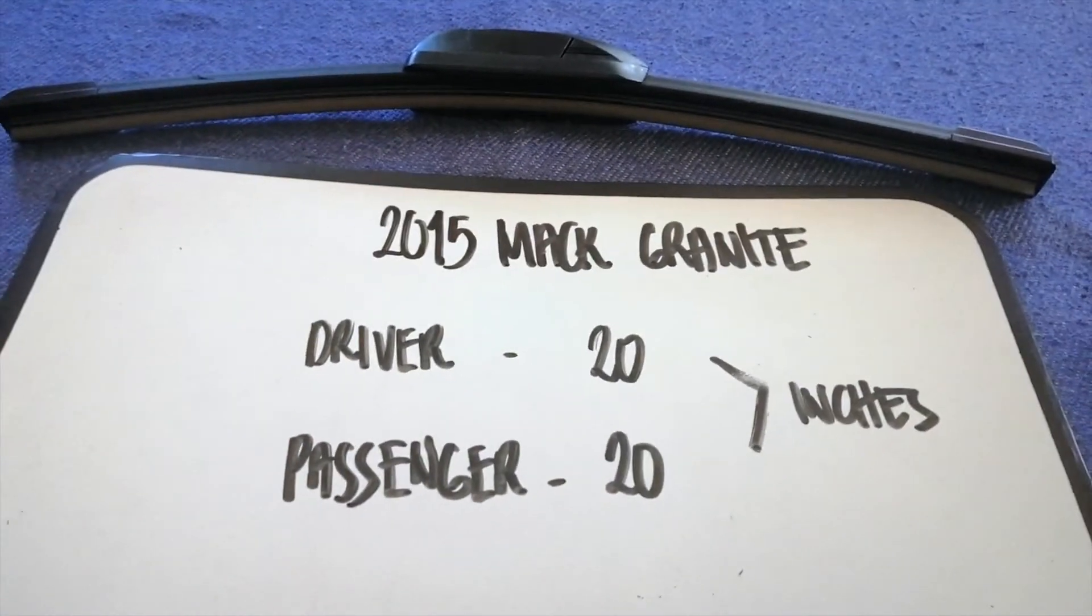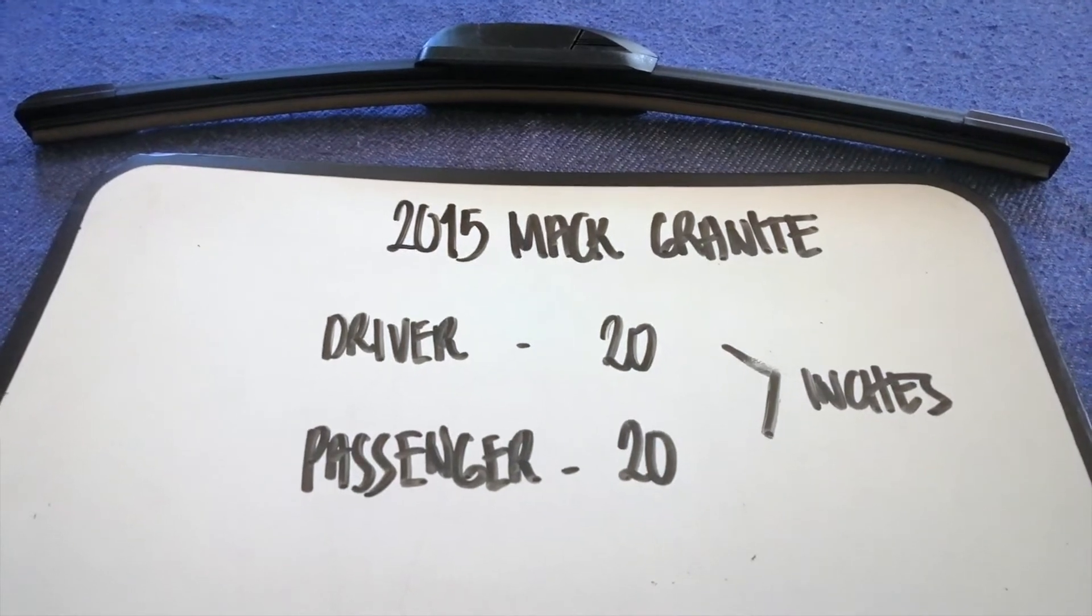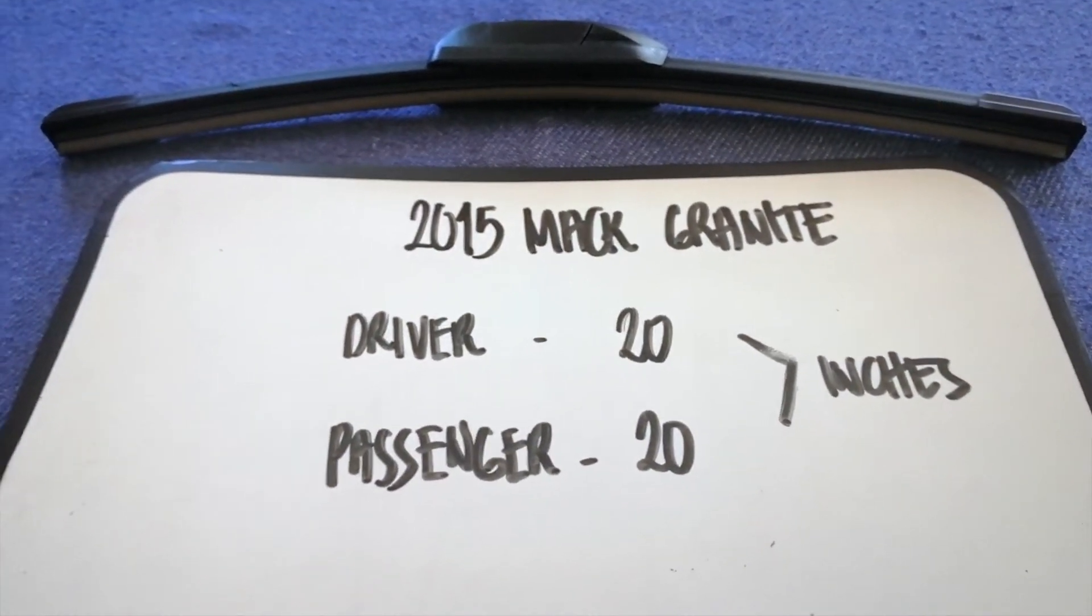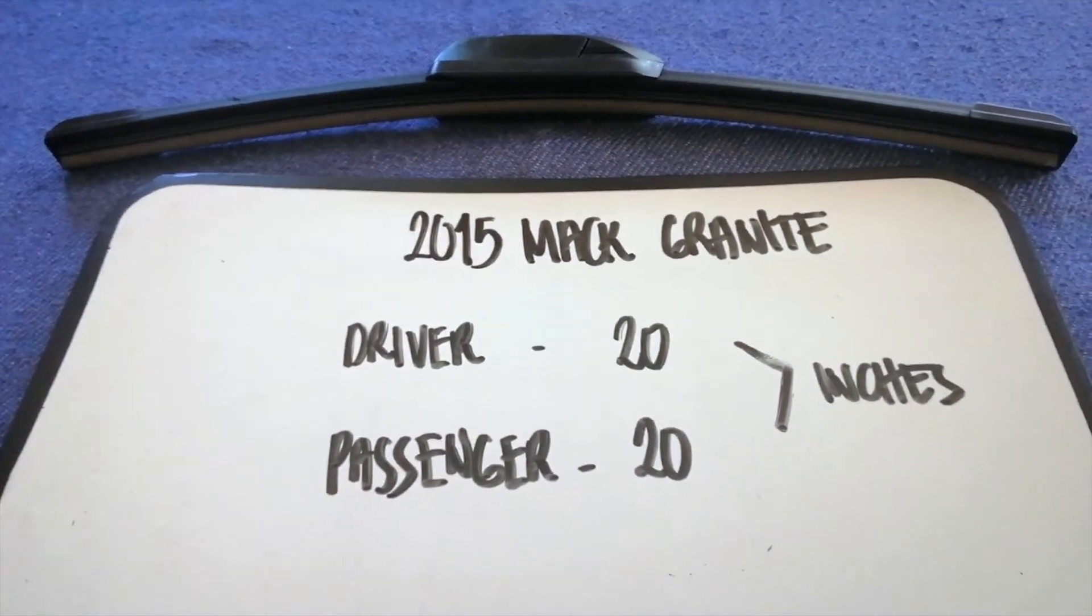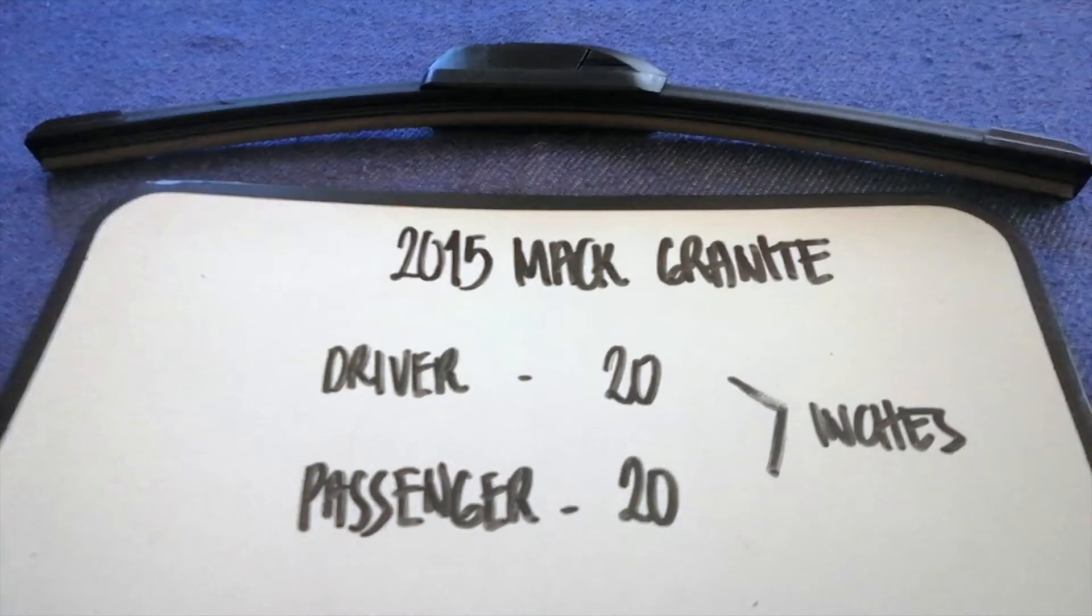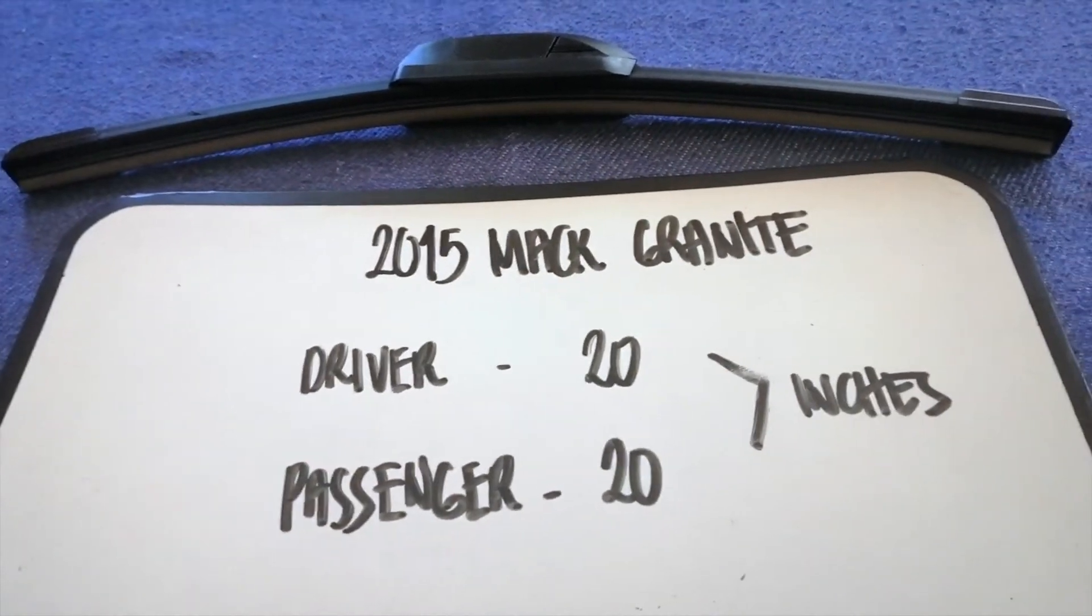The wiper blade replacement size for the 2015 Mack Granite is 20 inches for the driver and 20 inches for the passenger. The blade size is the same for both sides.